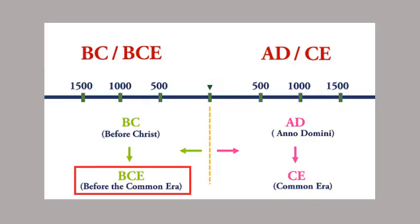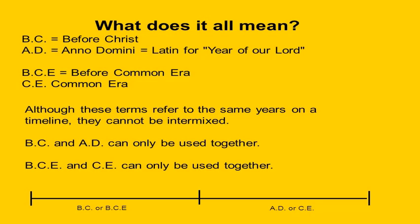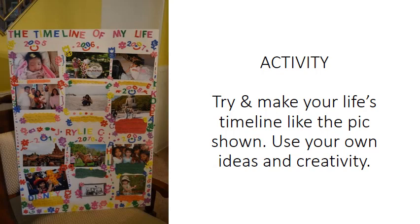This timeline should make it clear to you about the terms BC, AD, BCE and CE. Take a look, but remember one thing: although these terms refer to the same years on a timeline, they cannot be intermixed. That is, BC and AD can only be used together, and BCE and CE can only be used together. I hope now you are clear as to how to use these terms with dates in history. Here's a small activity you can try at home for practice — try to make your life's timeline like the picture shown, using your own creativity and ideas. That's all for today. Until next time, goodbye.